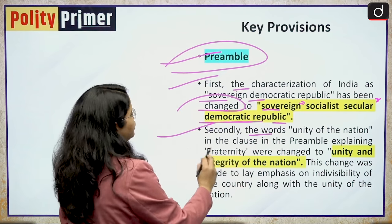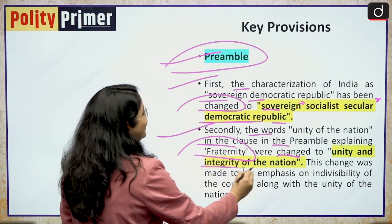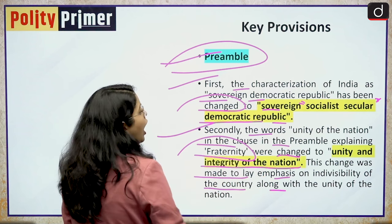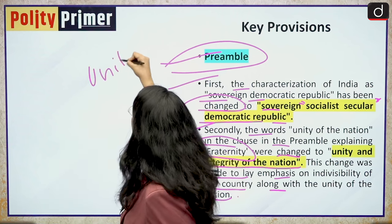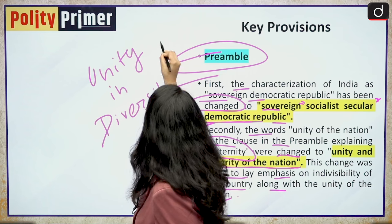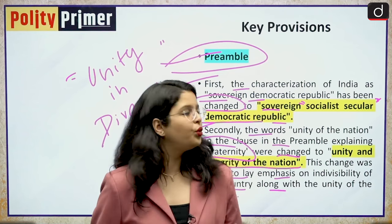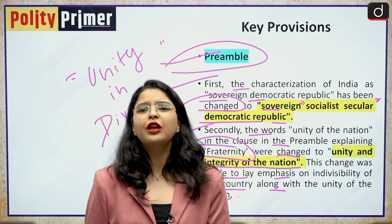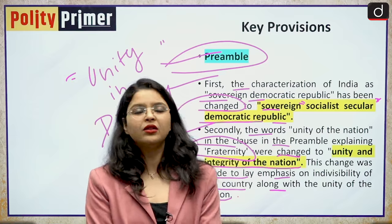Secondly, the words 'unity of the nation' in the clause explaining fraternity in the preamble were changed to 'unity and integrity of the nation.' This change was made to lay emphasis on indivisibility of the country — unity in diversity — along with the unity of the nation. Because India always talks about unity in diversity, this phrase was made explicit by including 'unity and integrity of the nation,' as we wanted to assert that no one can interfere in our internal sovereign matters.